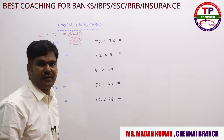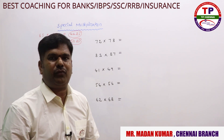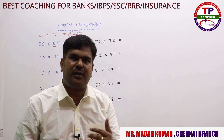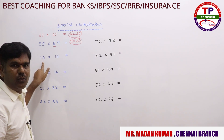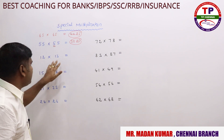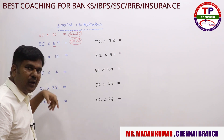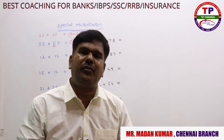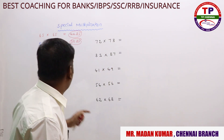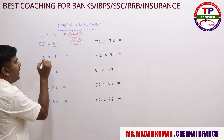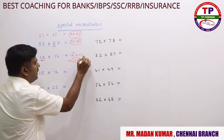Now if I mention 12×13 — these are immediate next consecutive numbers. The rule is: take the smaller number, square it, and add that smaller number again. Which is the smaller number between 12 and 13? It's 12. So 12² = 144, and 144 + 12 = 156. So 156 is the answer — no need to even put pen to paper, you can calculate it mentally.